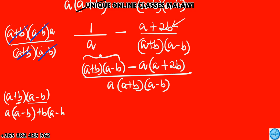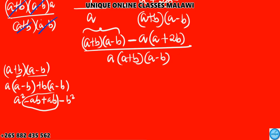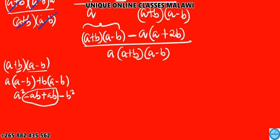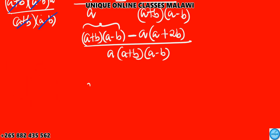So what will happen? A times a is a squared, a times minus b is minus ab. Then plus b times a is ab, negative and positive is negative, b times b is b squared. Combining like terms together, ab and minus ab cancel to zero, so we remain with a squared minus b squared, which is the same as the denominator.